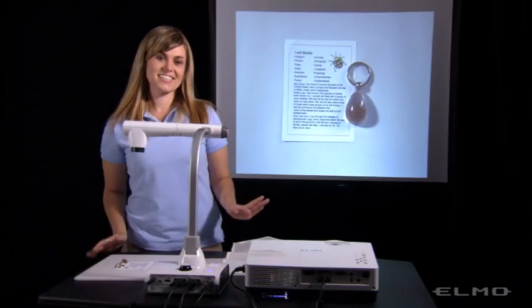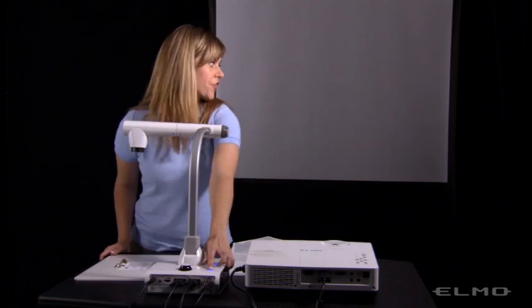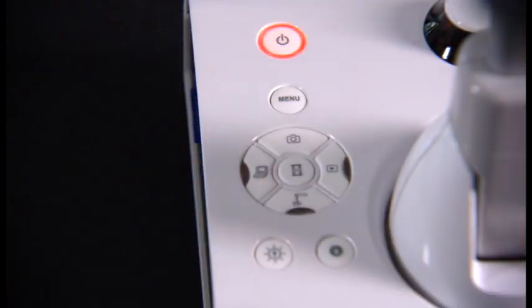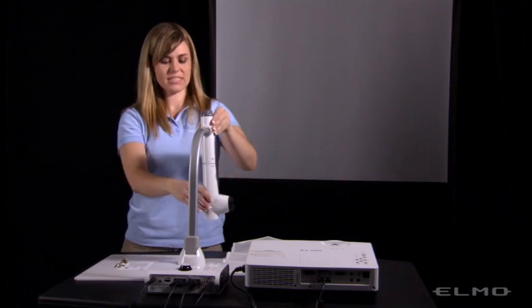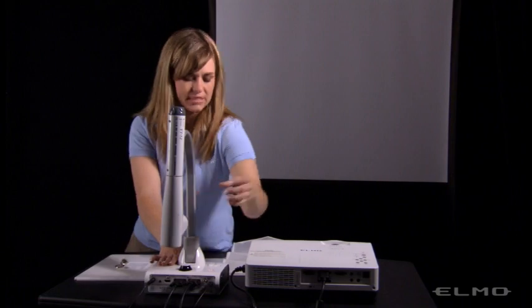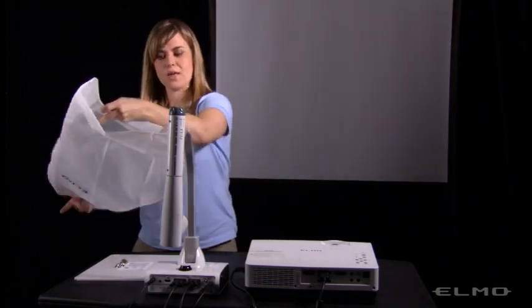When you're all finished, you can turn off your projector, turn off your document camera, and then rotate the camera so that it's in its smallest position, and use the dust cover to cover your TT12, and that's it.